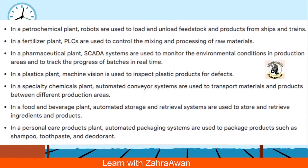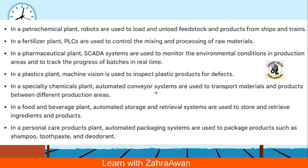In pharmaceutical plants, data acquisition systems and automatic systems use environmental conditions to monitor and track progress in real-time, meaning large amounts of data are monitored and processed in real-time. In plastic plants, machines are used to inspect plastic products for defects. In industries, automation machines are used for inspection. Next is a specialty chemical plant, which uses a conveyor system to transport products between different production areas.